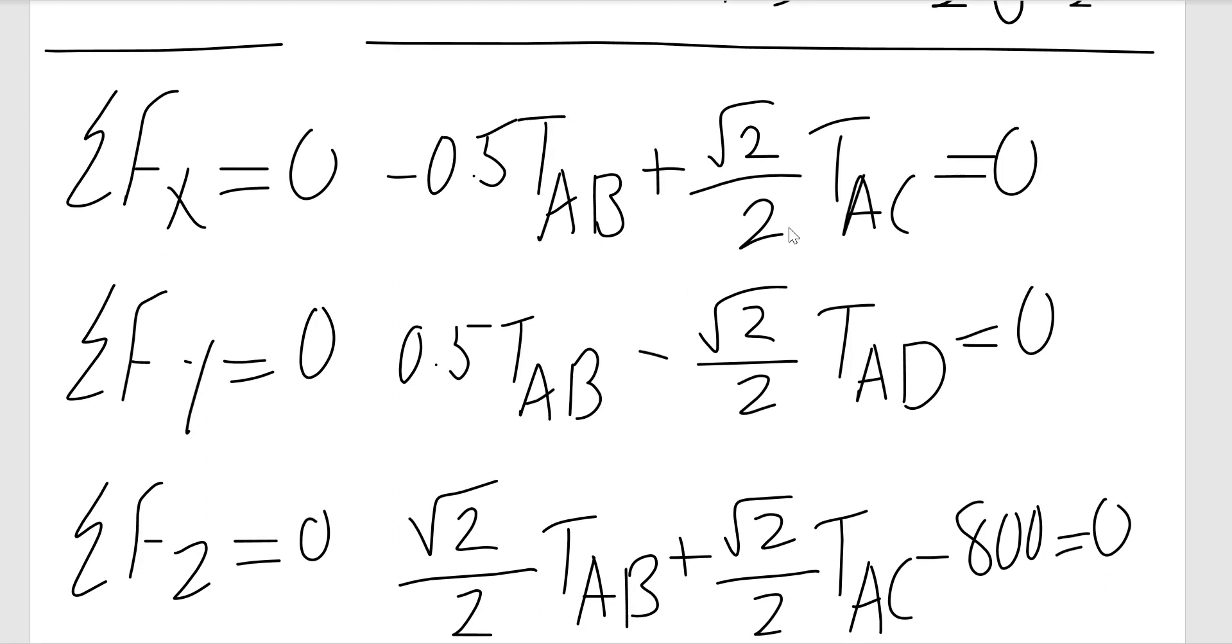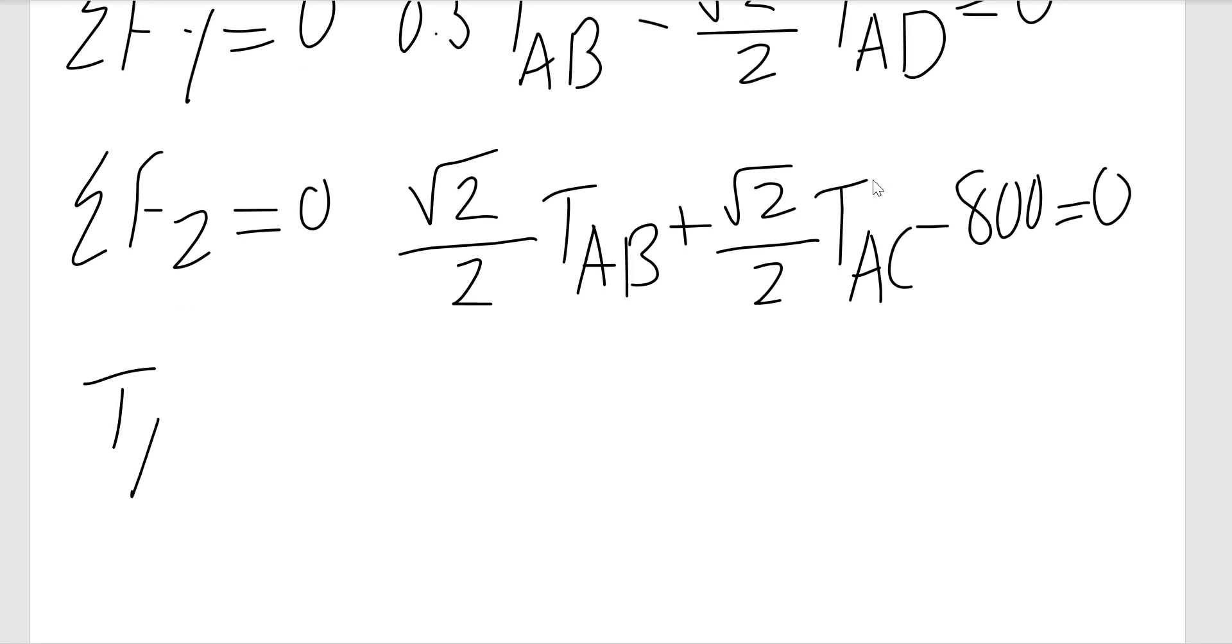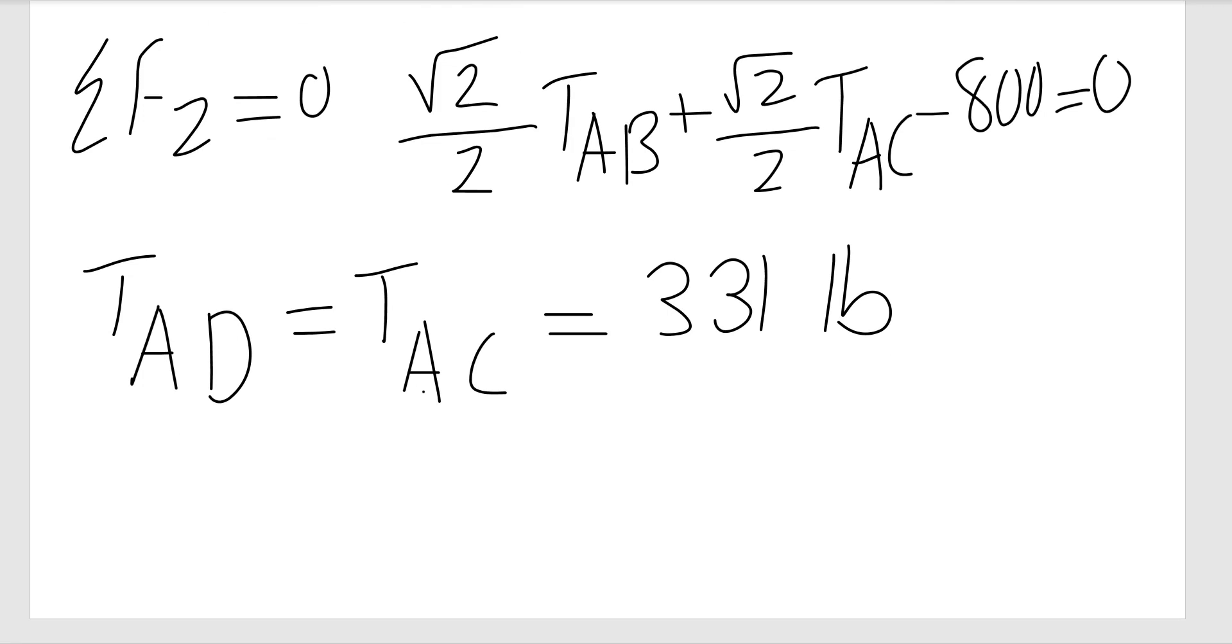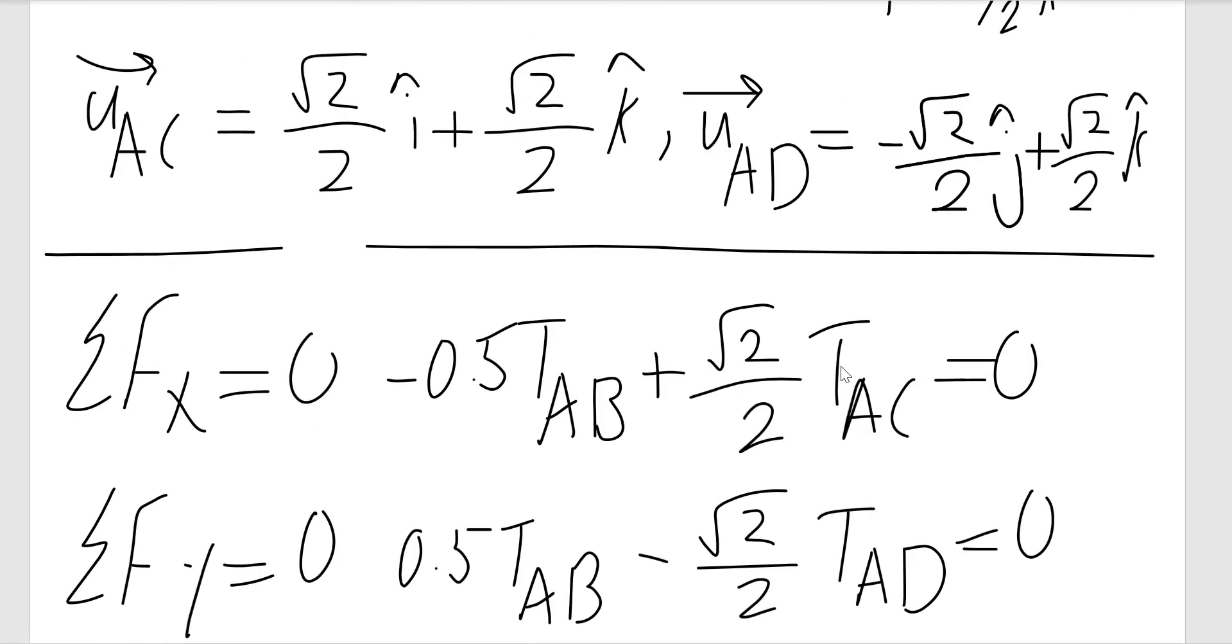Just looking at these two equations for TAB, TAC, and TAD, you see that TAC and TAD would be the same. Both of them are equal to 0.5 TAB times 2 over √2. Once you replace them, then you will find TAC and TAD. TAD is the same as TAC: 331 pounds. After replacing it, TAB would be 469 pounds. So these are the tensions in the three ropes. We had three equations and three unknowns, and we solved for all the unknowns.